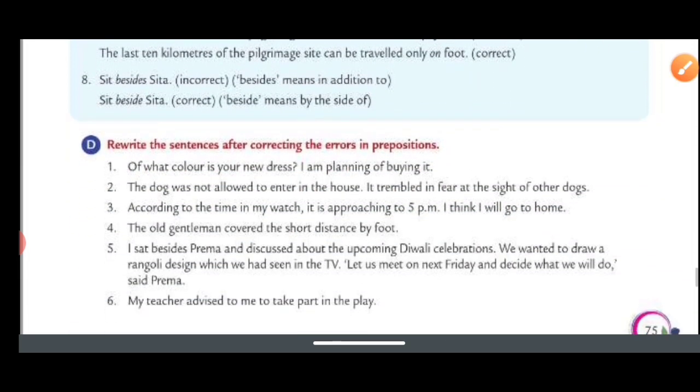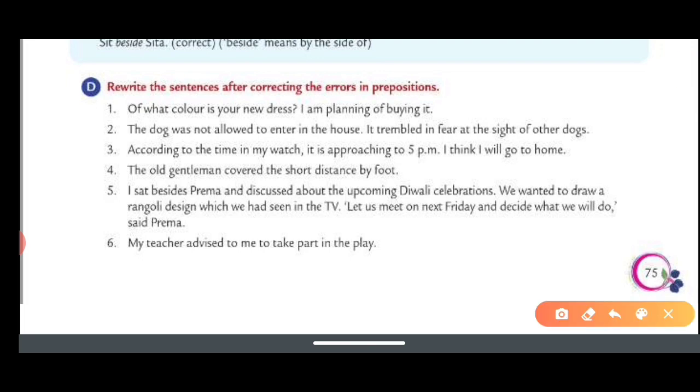Move to Part D. Rewrite the sentences after correcting the error in prepositions. Of what color is your new dress? I am planning to buy it. Your answer is: What color is your new dress? No need to use of here. What color is your new dress? I am planning to buy it. In the place of of, you have to use two.